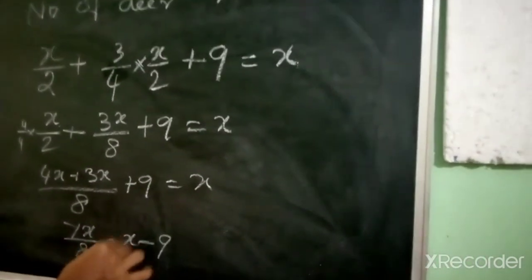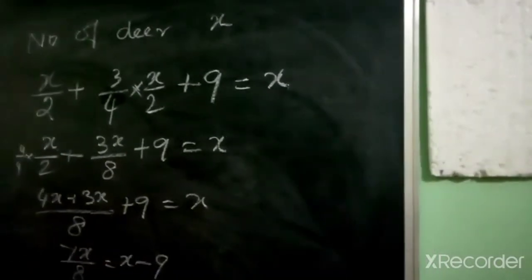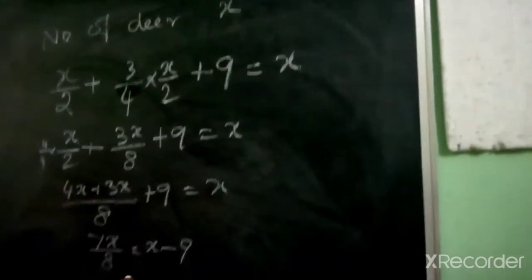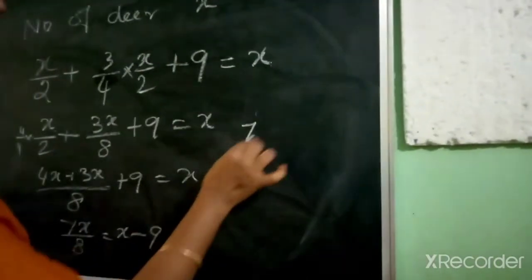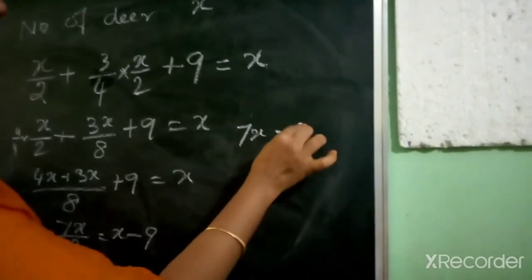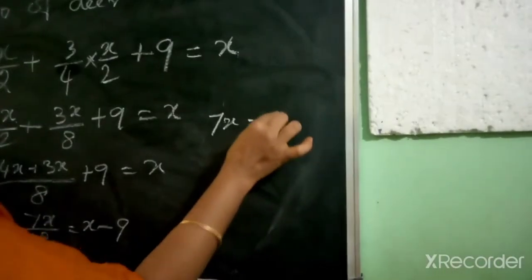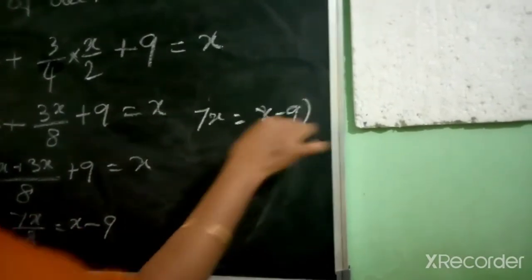The trouser material selling price includes 10% profit on Rs. 180. So 180 + 18 = Rs. 198. The trouser selling amount is Rs. 198.